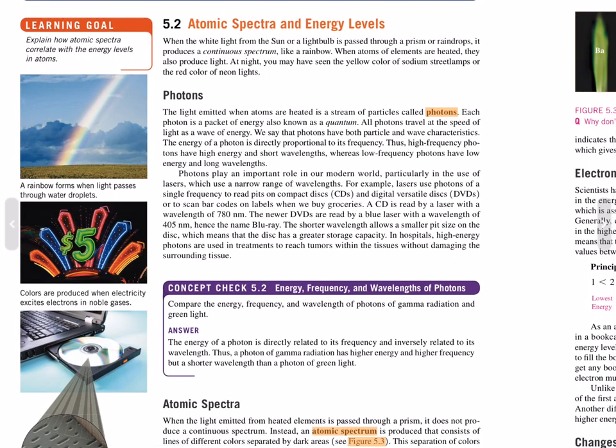When white light from the sun or a light bulb is passed through a prism or raindrops, it produces a continuous spectrum, like a rainbow. When atoms of elements are heated, they also produce light. At night you have seen the yellow color of sodium street lamps or the red color of neon lights.